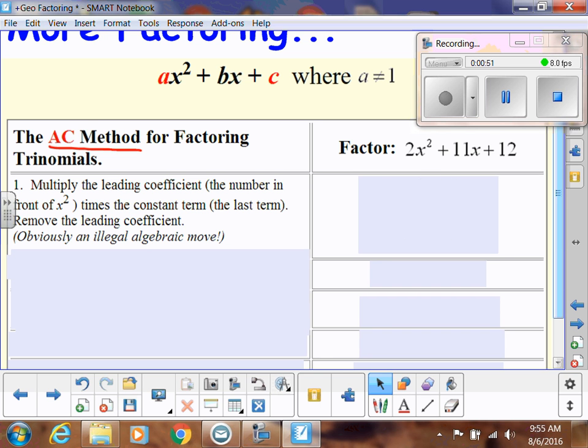So I'm going to take 2 times 12, and then I'm going to just rewrite this as x² + 11x + 24. This 24 came about because we did 2 times 12, and notice that this is no longer there. Obviously, that's an illegal algebraic move, and I'll show you why that actually works in a minute.